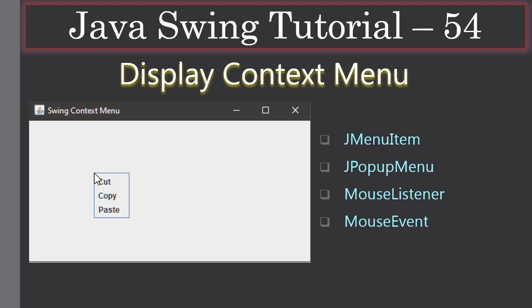Hello friends, welcome to the Java Swing tutorial. In this video we are going to see how to display a pop-up menu. Here you can see our frame window, and at the mouse right-click location we are displaying a context menu that contains three menu items: cut, copy, and paste.